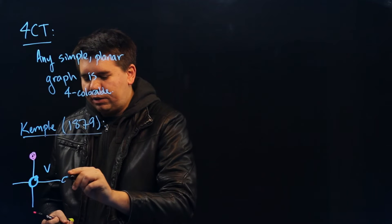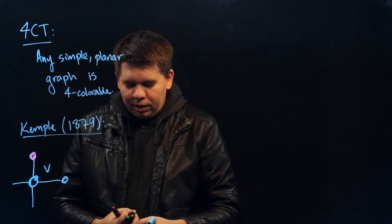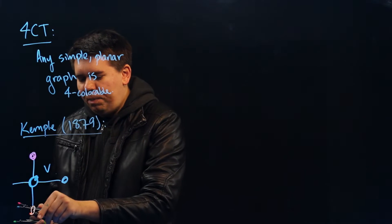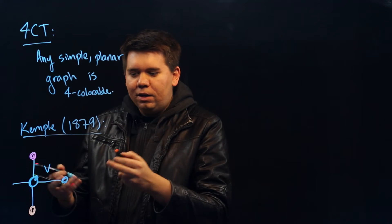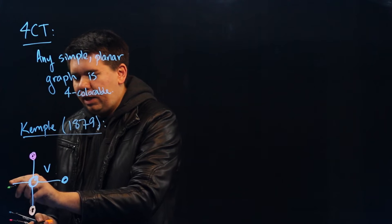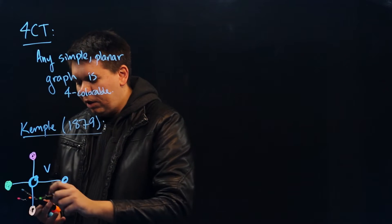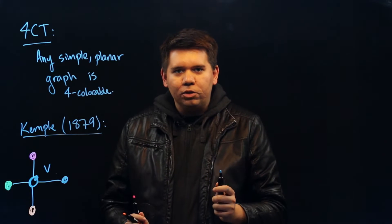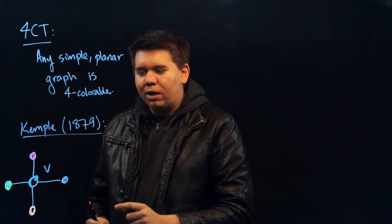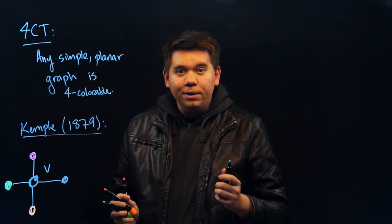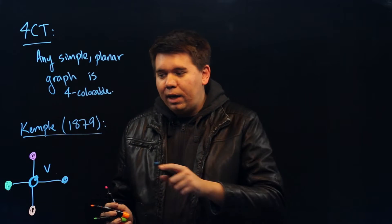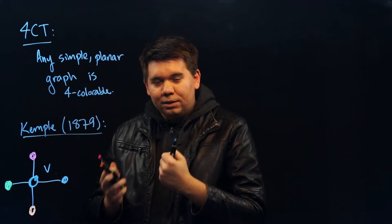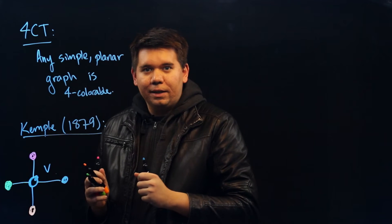Now, if these four other vertices were colored only three colors, we'd be done, because you can just color v whatever color remains. But if those four vertices use up all four of our colors already, it seems like we're in trouble. What are we going to color v? The answer is we need to find some way to recolor the rest of the graph to free up some color to color vertex v.